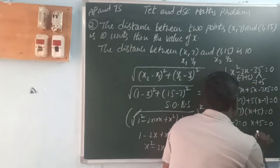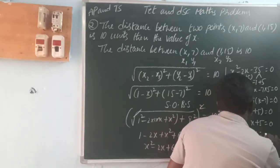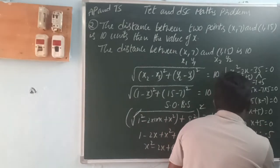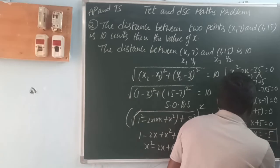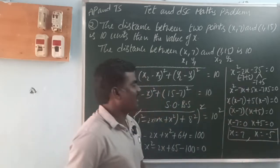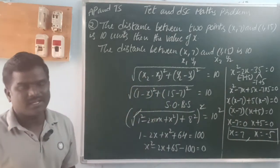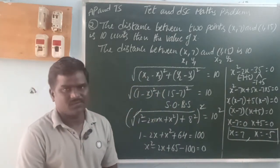Factoring the quadratic x squared minus 2x minus 35 equals 0, we get x is equal to 7 or x is equal to minus 5.